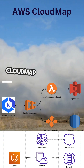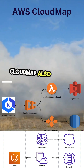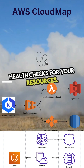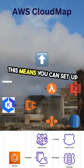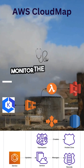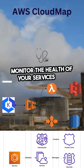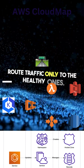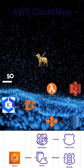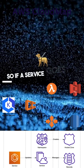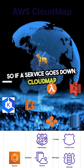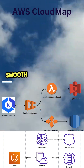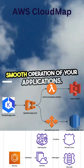But that's not all — CloudMap also lets you define health checks for your resources. This means you can set up rules to monitor the health of your services and automatically route traffic only to the healthy ones. So if a service goes down, CloudMap will steer traffic away from it, ensuring smooth operation of your applications.